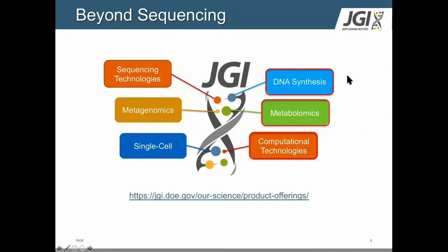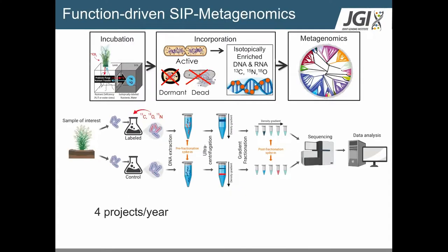We have capabilities beyond sequencing — for example, our DNA synthesis program, which allows users to synthesize genes or pathways. If you're interested in functional characterization of genes and pathways, it's very popular with biosynthetic gene clusters for secondary metabolites. We can also synthesize combinatorial pathway libraries for metabolic engineering purposes. We also have individual program calls that allow you to use some of these capabilities. We also have metabolomics, which I thought would be of interest to this audience.